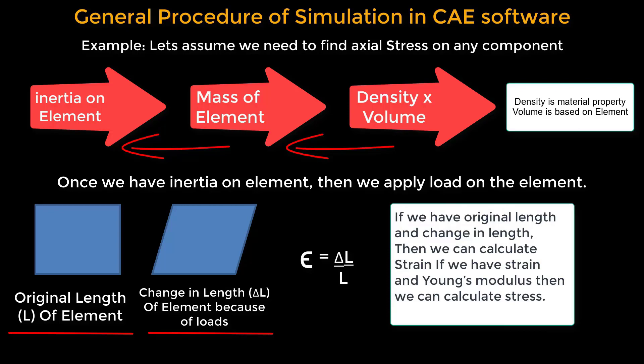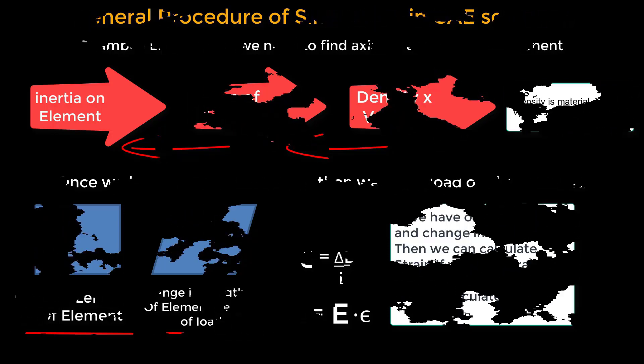Strain is a dimensionless number that gives us a sense of how much an object is stretched or compressed. With the strain value at hand and knowing the material's Young's modulus — a measure of the stiffness of the material — we can calculate the stress on the element. Stress is calculated by multiplying the strain by Young's modulus. This final figure gives us insight into the force per unit area within the component caused by the applied load.